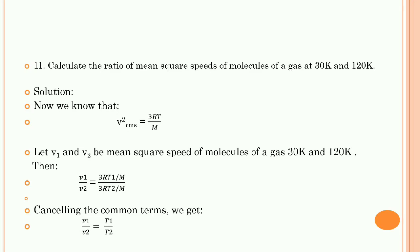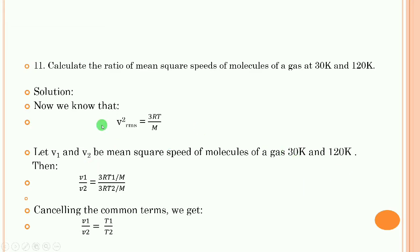Problem 11: Calculate the ratio of mean square speeds of molecules of a gas at 30 Kelvin and 120 Kelvin. This type of numerical can be asked for two marks. We need to calculate the ratio of mean square speeds. We already know the formula: the square of root mean square velocity, v_rms squared, is equal to 3RT upon M.